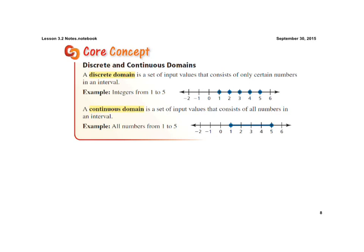Here, for example, they have the integers graphed from 1 to 5. For example, if your mom said, hey, run to the store and you must come back with 1 to 5 eggs.